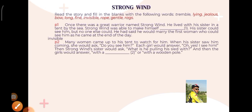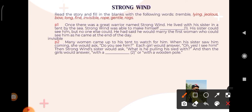Next, second paragraph: 'Many women came up to his tent to watch for him. When his sister saw him coming, she would ask, do you see him? The girls would answer, oh yes, I see him. The Strong Wind's sister would ask, what is he pulling his sled with? And then the girl would answer with a wooden pole.' What do you think? What is the answer? The answer is 'rope.'